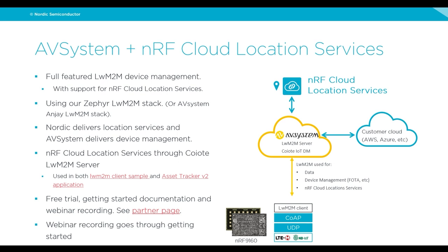Here you can see the architecture: the NRF9160 runs CoAP over UDP with the LWM2M client sample. LWM2M is used for data, device management, and NRF Cloud Location Services. The NRF9160 connects to the AVSystem cloud, which then communicates to NRF Cloud Location Services and optionally to a customer cloud.